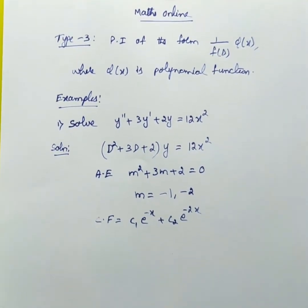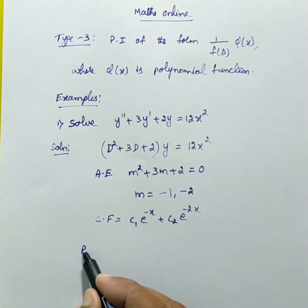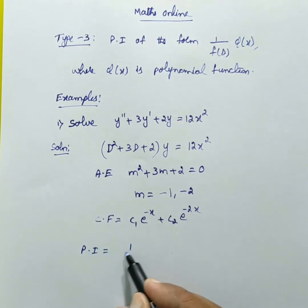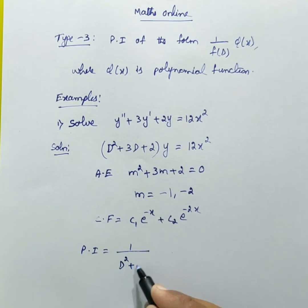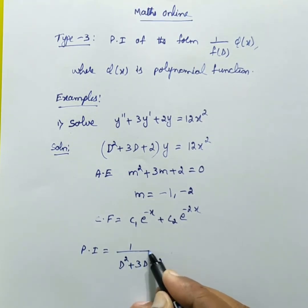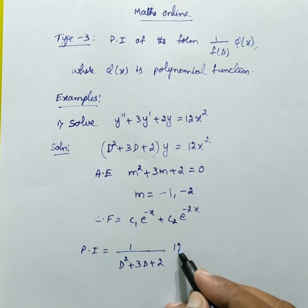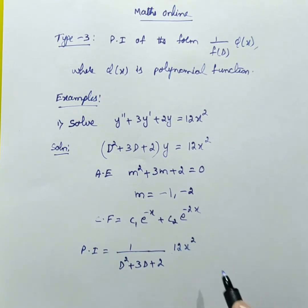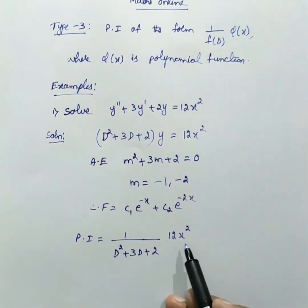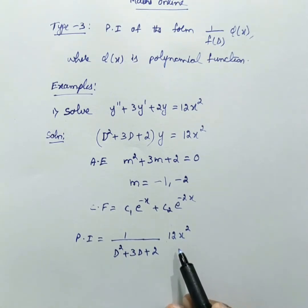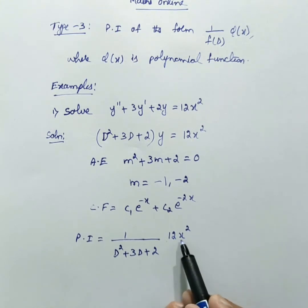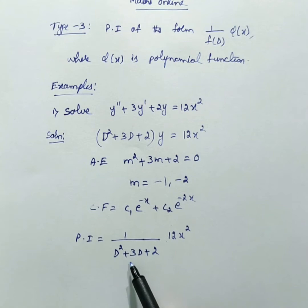Now the particular integral will be 1 over (D squared plus 3D plus 2) times 12x squared. Because x squared is a polynomial function, we will adopt the division method — dividing 12x squared by (D squared plus 3D plus 2).